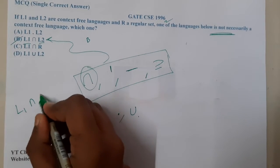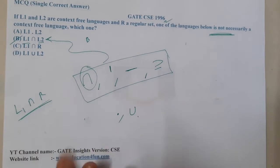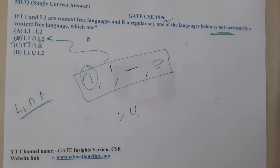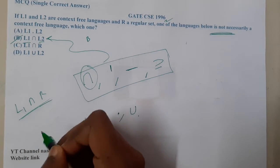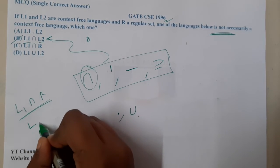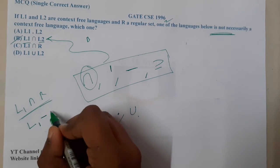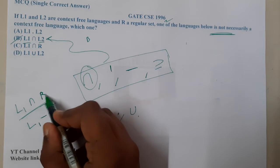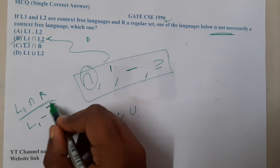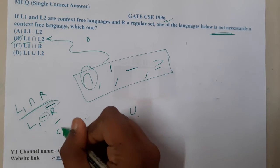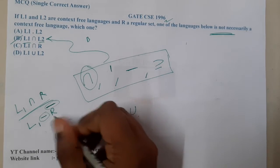Most students will have a doubt with respect to option C: L1 intersection R. This is a bit tough. When it comes to this, it can be converted as L1 minus R-complement. Regular languages follow complement as well as subtraction.